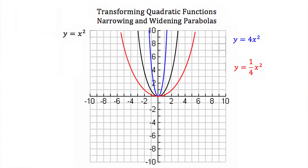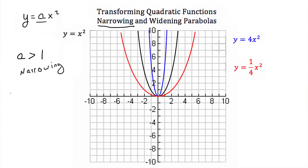Now let's talk about narrowing and widening parabolas. Here in black we have our parent function y equals x squared. In blue we have y equals 4x squared, and in red we have y equals 1/4 x squared. If we think of our quadratic as y equals ax squared, where a is our coefficient: if a is greater than 1, we are narrowing our parabola. If a is between 0 and 1, we are widening our parabola. If a is less than 0, that's negative, so we just switch our direction. Multiplying x squared by a number between 0 and 1, like 1/4, will widen your parabola.